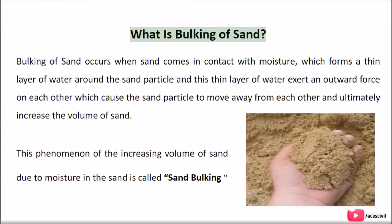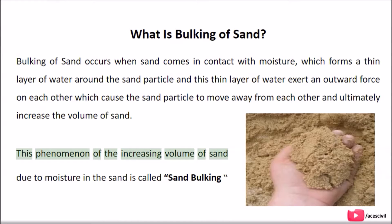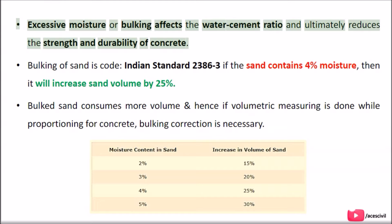What is bulking of sand? Bulking of sand occurs when sand comes in contact with moisture, which forms a thin layer of water around the sand particle. This thin layer of water exerts an outward force on each other, which causes the sand particles to move away from each other and ultimately increase the volume of sand. This phenomenon of increasing volume of sand due to moisture is called sand bulking. Excessive moisture or bulking affects the water-cement ratio and ultimately reduces the strength and durability of concrete.